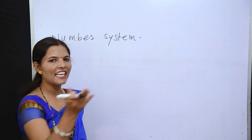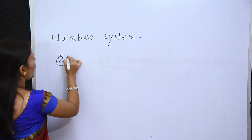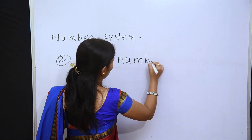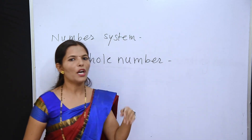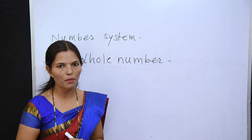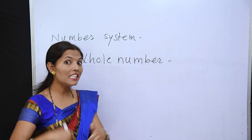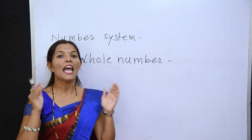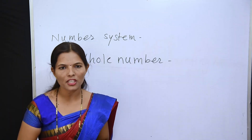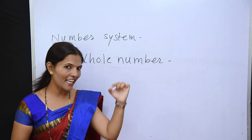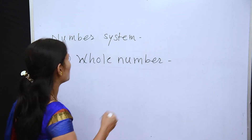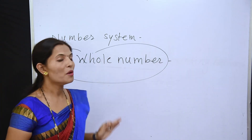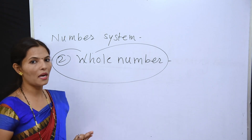Let's see the next number, that is whole number. Now, you learned natural numbers: 1, 2, 3, 4. But what about 0? Indian mathematicians, the Arya Bhatta who was a mathematician, discovered 0. And after 0 was added into the whole number system, the number system became complete. So 0 was added and that is how we got whole number.